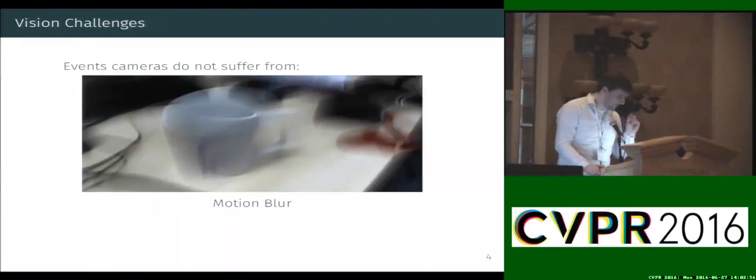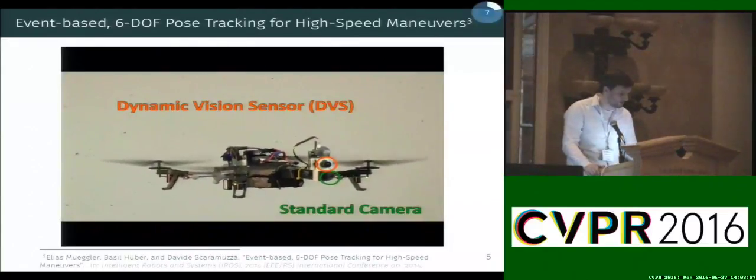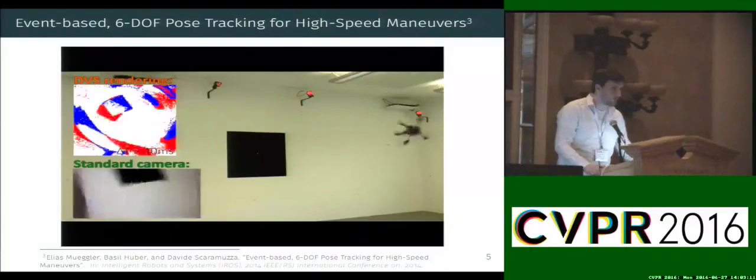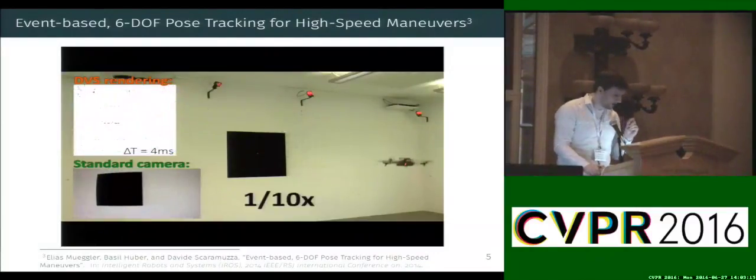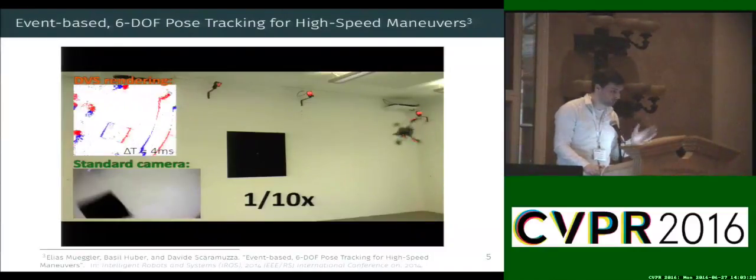Furthermore, the events are measured within a millionth of seconds, so it's quite fast. So these advantages have been highlighted in previous work. For instance, by the work of Elias Mugler, who mounted an event camera on a quadrocopter in order to track a marker on a wall for high-speed pose estimates while the quadrocopter is performing those motions.